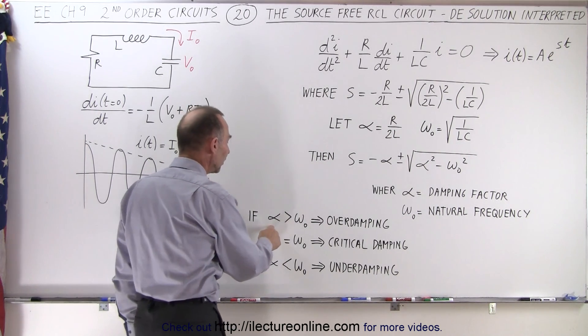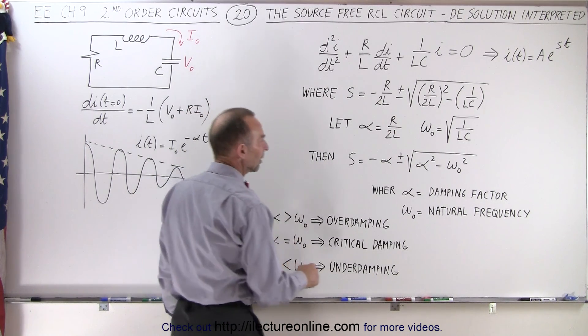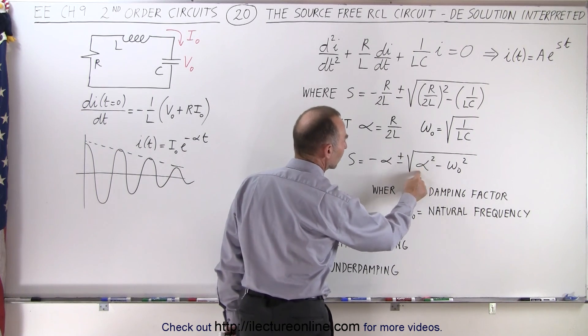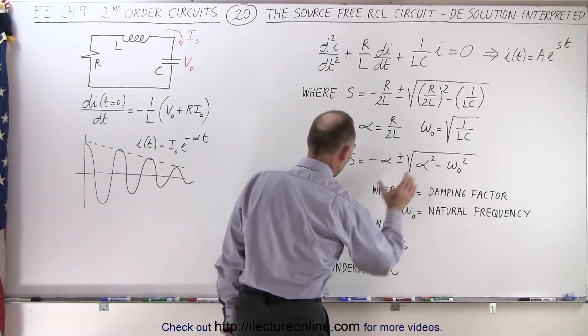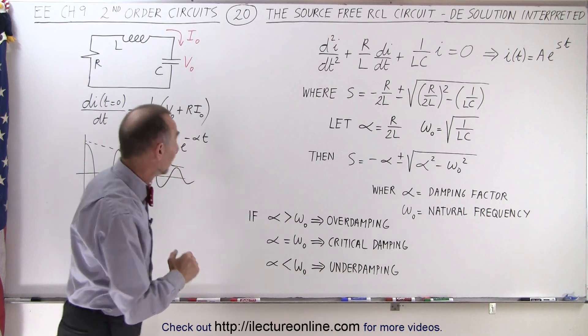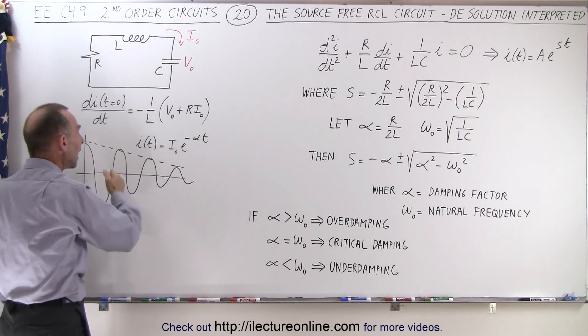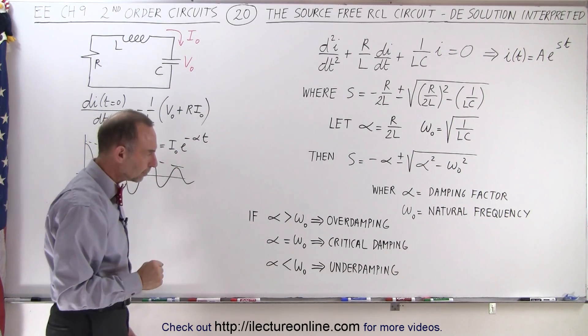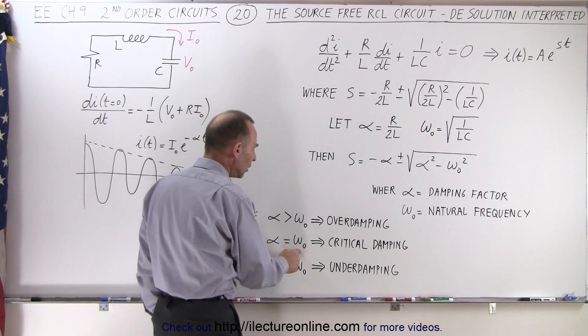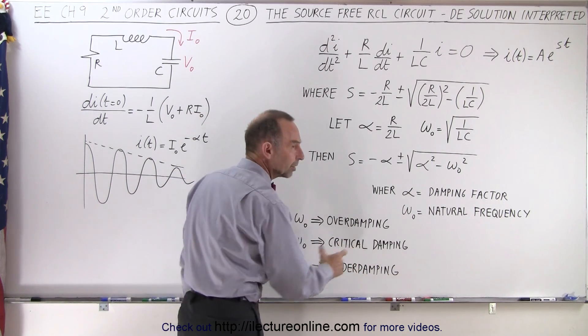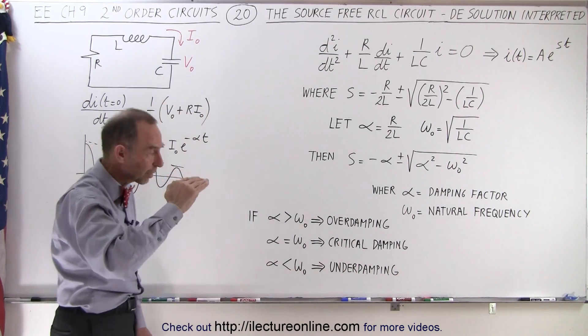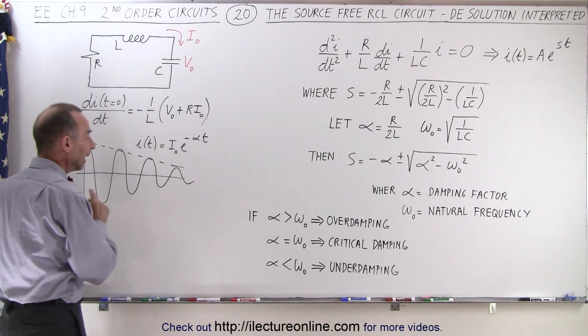Now, if alpha is larger than omega sub-naught, if the damping factor is bigger than omega sub-naught, then we have what we call overdamping. Very quickly will the damping go to zero. If alpha is equal to omega, we have what we call critical damping, then it will take a little bit longer before we come to a stop.